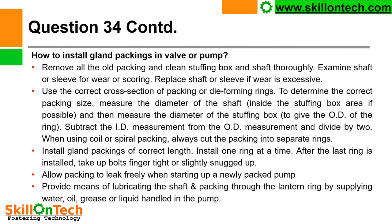How to install gland packing in valve or pump? First of all, remove all the old packings and clean stuffing box and shaft thoroughly. Examine shaft or sleeve for wear or scoring. Replace shaft or sleeve if wear is excessive. Use the correct cross section of packing or die forming rings. To determine the correct packing size, measure the diameter of the shaft inside the stuffing box area and then measure the diameter of the stuffing box to give the OD of the ring. Subtract the ID measurement from the OD measurement and divide by 2. This will give you the size of the gland packing.